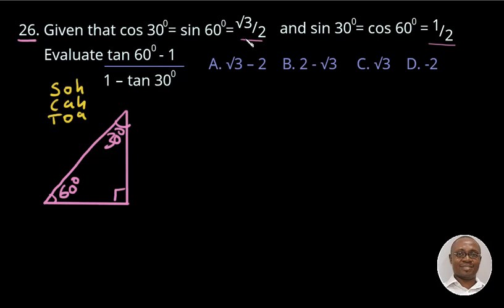So for cos 30 degrees we were told is √3 over 2. So this is the angle that we are talking about. And the adjacent is the side by the right angle. That is this side. So we are told it is √3. And the hypotenuse, that is the longest side of the triangle, we are told is 2.